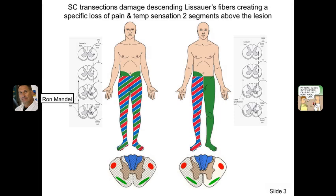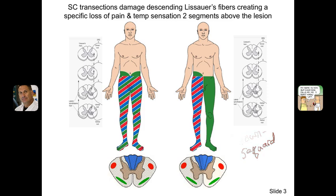This slide is intended to demonstrate the clinical significance of Lissauer's tract. On the right side of the slide, we have a representation of Brown-Séquard syndrome — a hemisection of the spinal cord, in this case on the left side of the body. Blue here represents fine touch and proprioception, green is pain and temperature, and red is motor function. Having color indicates loss of that function. So we have a hemisection on the left side.